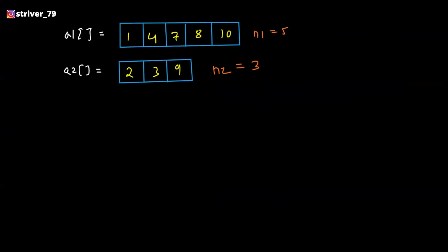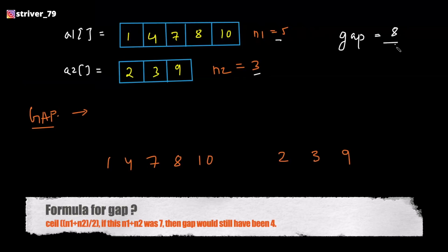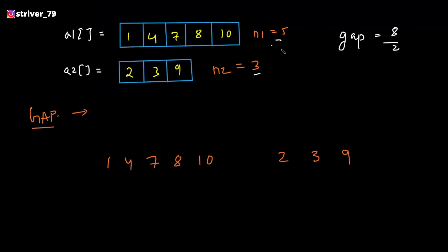The next optimal approach is to use the gap method. I went through a lot of books but didn't find the perfect intuition for it, so I'll just tell you about the algorithm. If any of you have the intuition about this gap algorithm, you can drop it in the comment section. The gap algorithm initially takes the gap to be total size divided by 2 — here that's 5 plus 3 equals 8, divided by 2, which gives you 4. So the initial gap is 4.